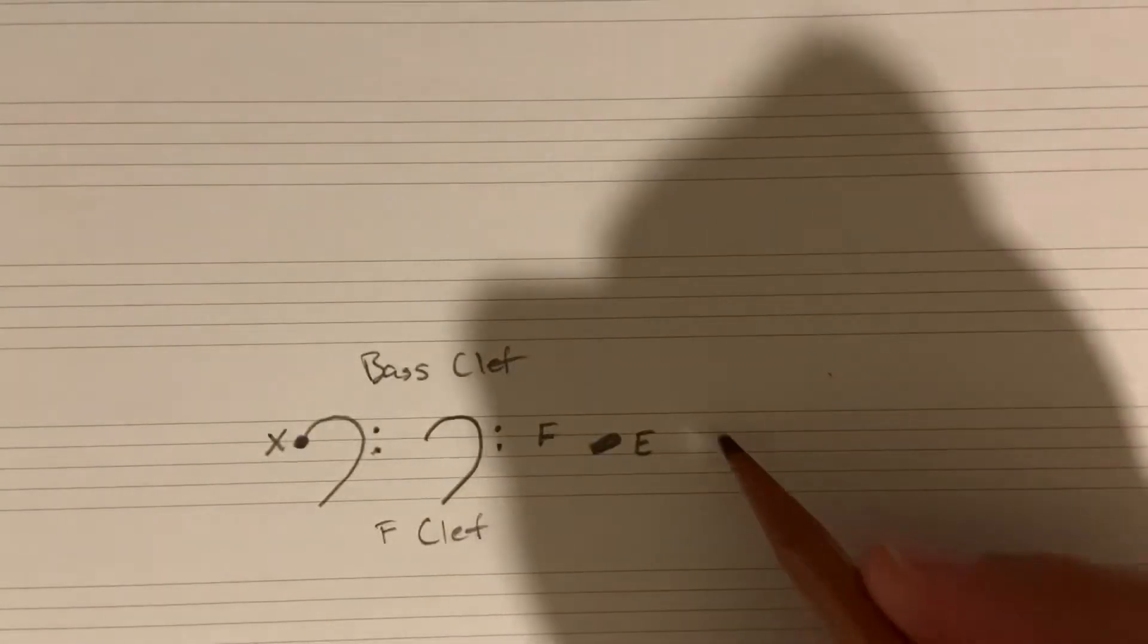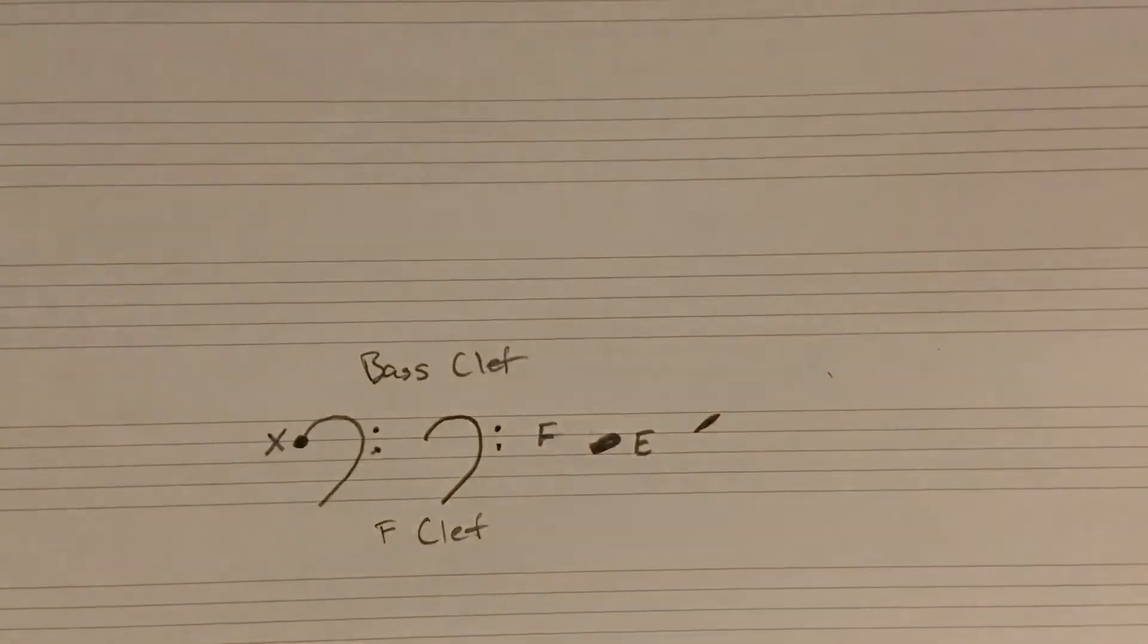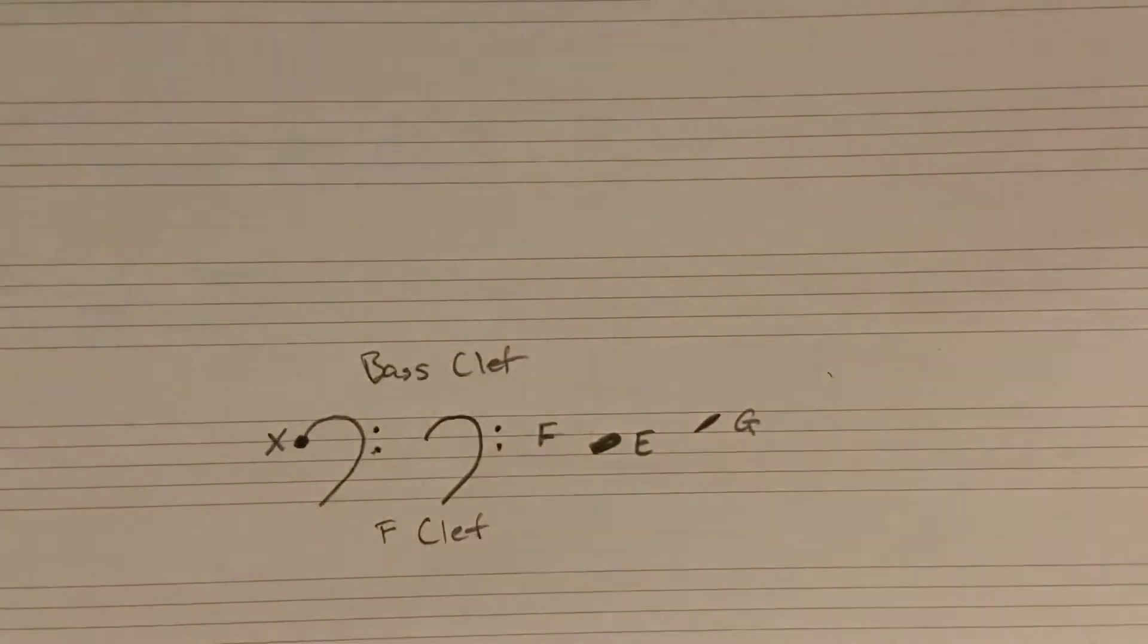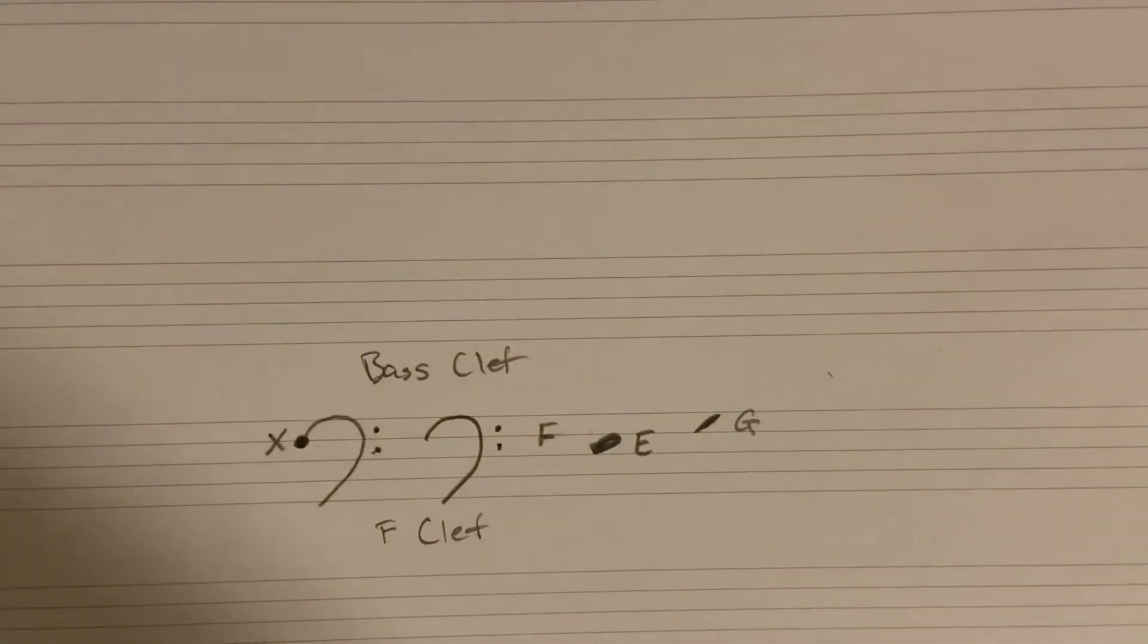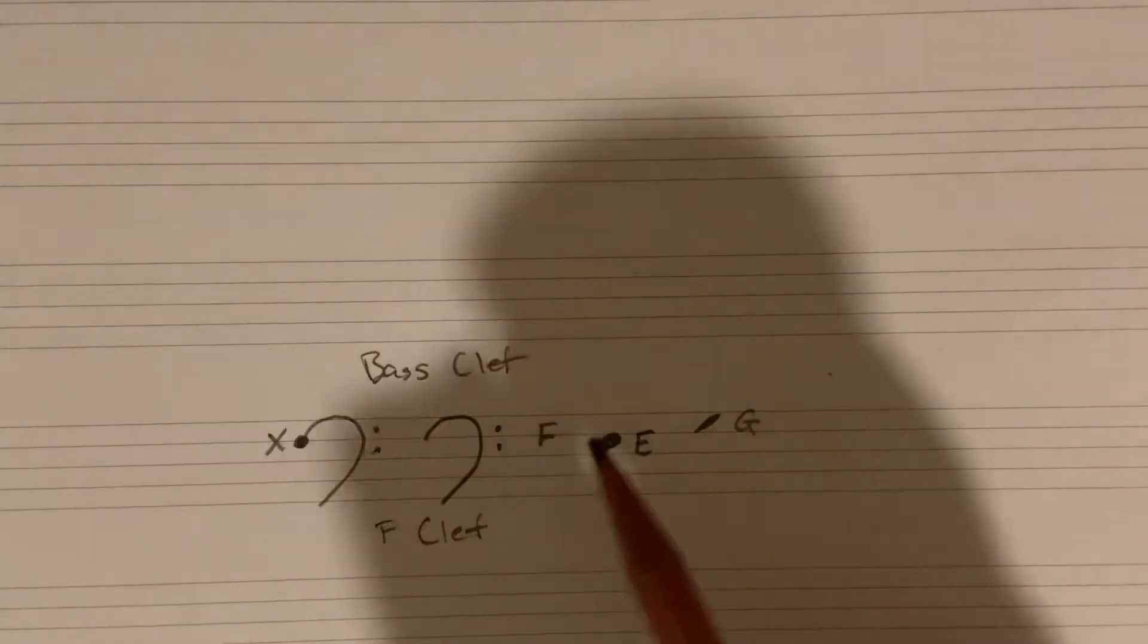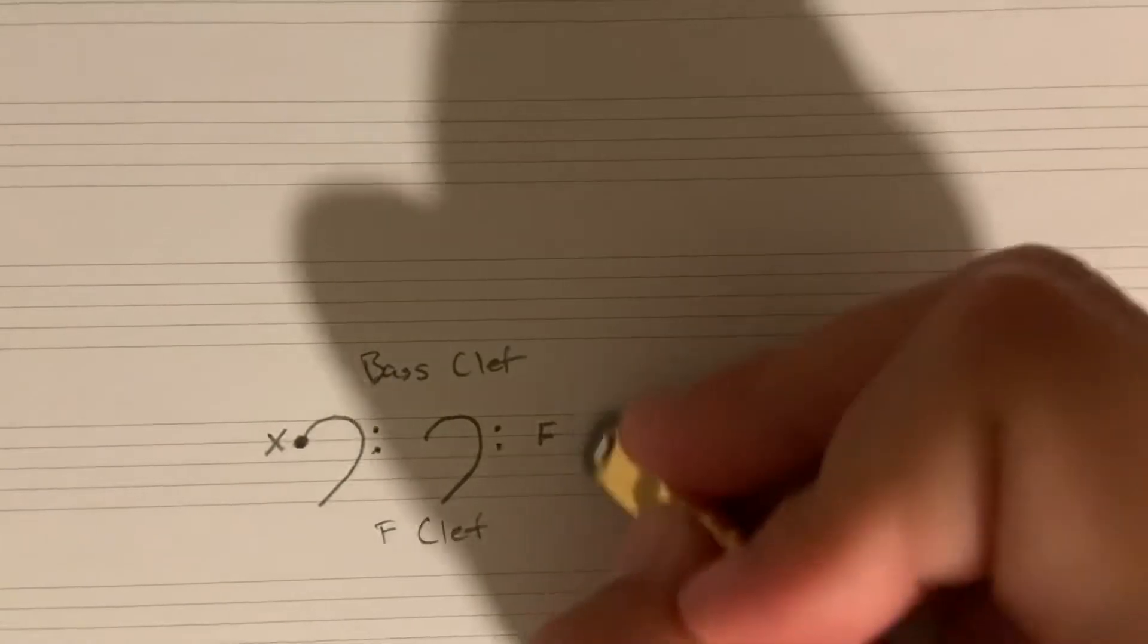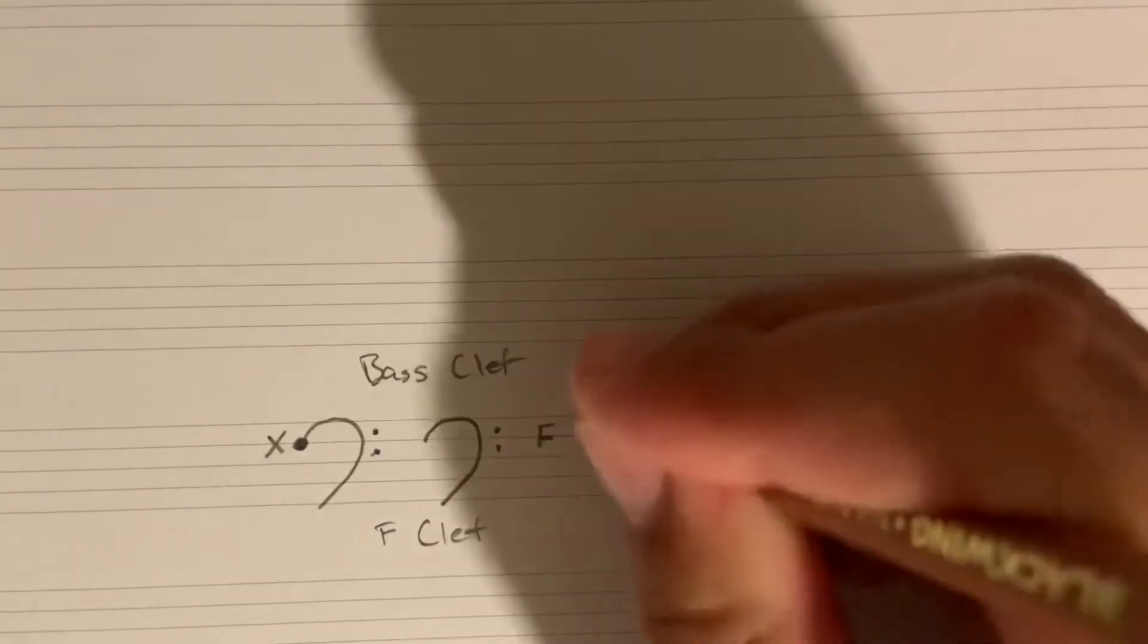And then let's see if we can find the note just above F here. We're stepping up from F. Alright, hopefully you came up with G. So from here, we're actually going to talk about the spaces. I know we started on a line, but that's just because that's our F clef. So we're going to talk about the spaces from here. So we have our E and we have our G. And I'm actually going to switch these guys around here just so it makes a little bit more sense for us.